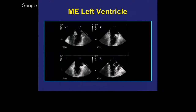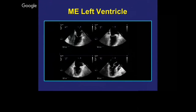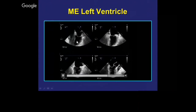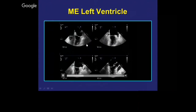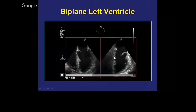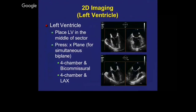3D TEE helps us to take multiple views of the left ventricle with biplane imaging. You can have images that are 90 degrees from each other on the same screen. You have your four-chamber view and you have the two-chamber view because you have orthogonal planes — that is what 3D has provided for us.